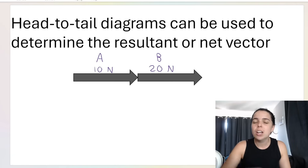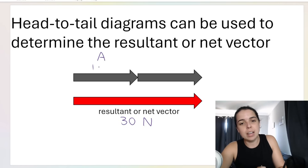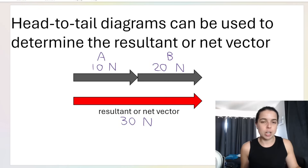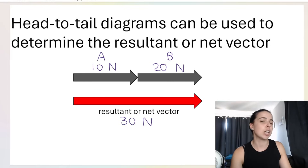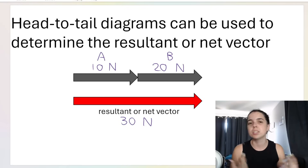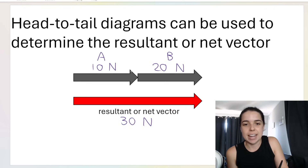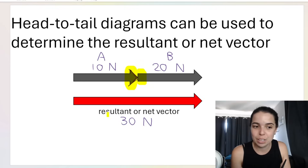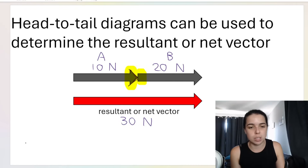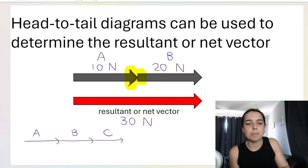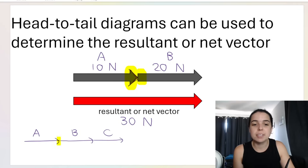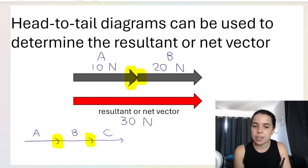Why is it called head to tail? Look at how the diagram is drawn. The first vector's head is touching the next vector's tail. If I had three vectors all going to the right — vector A, vector B, vector C — you can see that the head of one vector is touching the tail of the next. This applies to any vectors: forces, acceleration, velocity, momentum, etc.